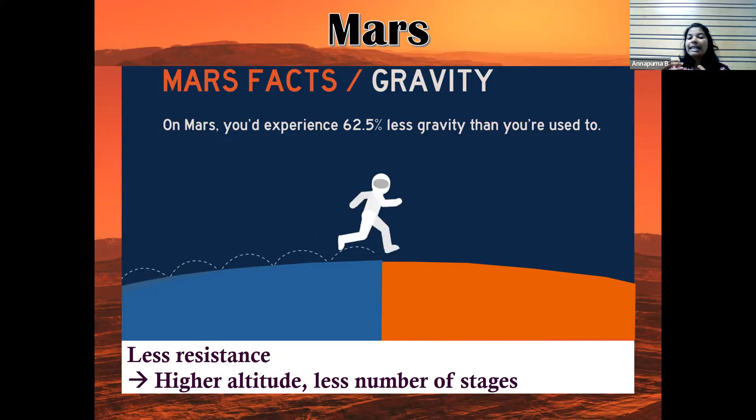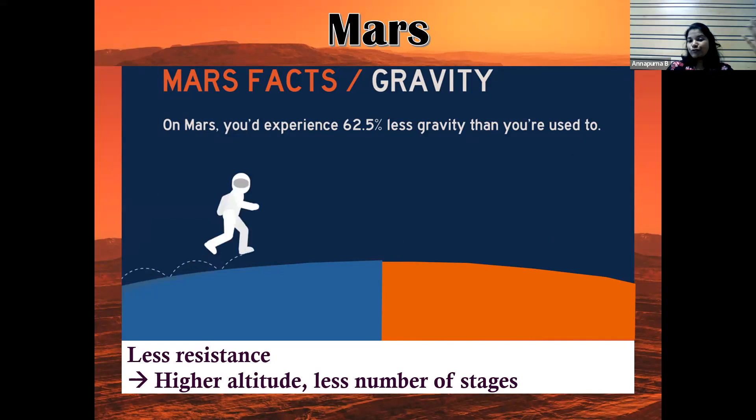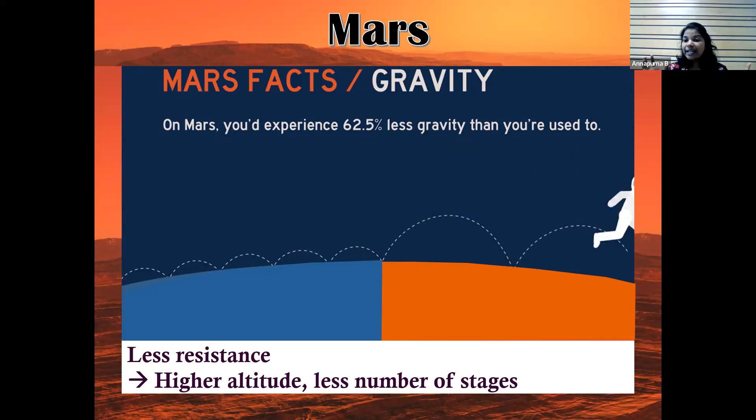The lower gravity and thinner atmosphere mean you need fewer rocket stages on Mars. If you needed three stages on Earth, you might only need one on Mars. This is an advantage of launching a rocket from Mars compared to Earth.